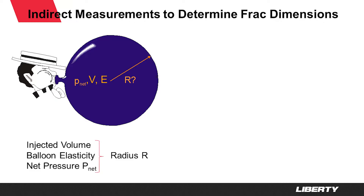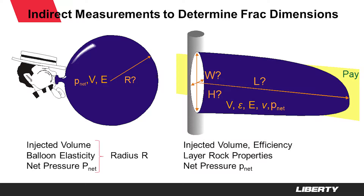There are things we can measure on location — for instance, injected volume, slurry efficiency, some properties of different rocks, and the net pressure inside the fracture — to then hopefully determine what the length, height, and width of the fracture are. That's ultimately what we are interested in to determine how we can optimize a frack design. Do we need more length or more width? Are we covering a certain height to cover different layers? Those are very important parameters, and to know those we need to measure certain parameters indirectly.